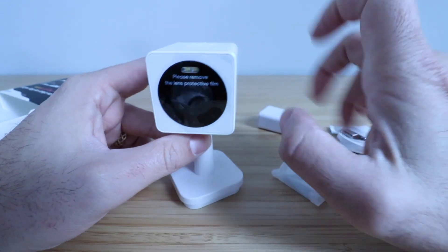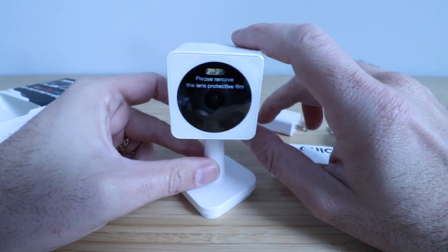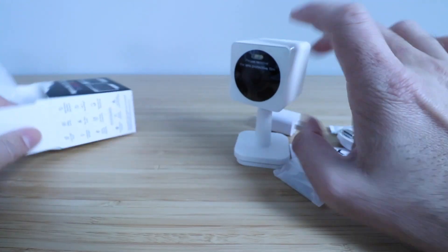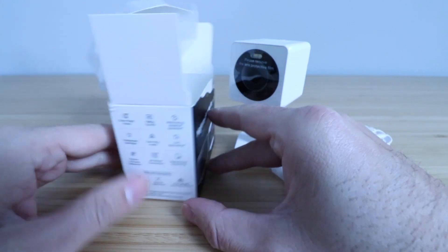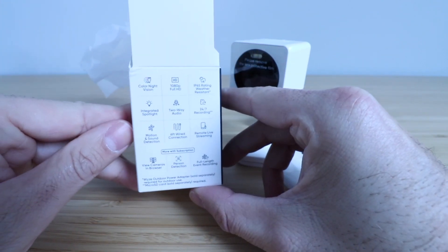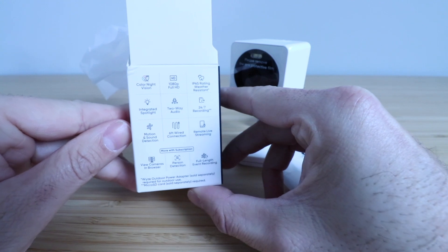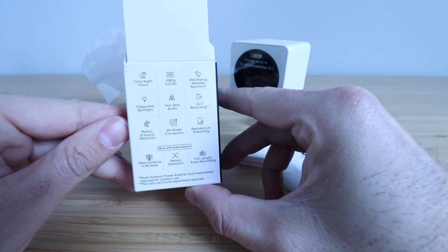So thank you for watching this unboxing of the Wyze Cam OG. We'll show you some of the features here on the side of the box. We've got color night vision, 1080 full HD, IP65 weather rating, integrated spotlight, two-way audio, 24/7 recording, motion and sound detection.